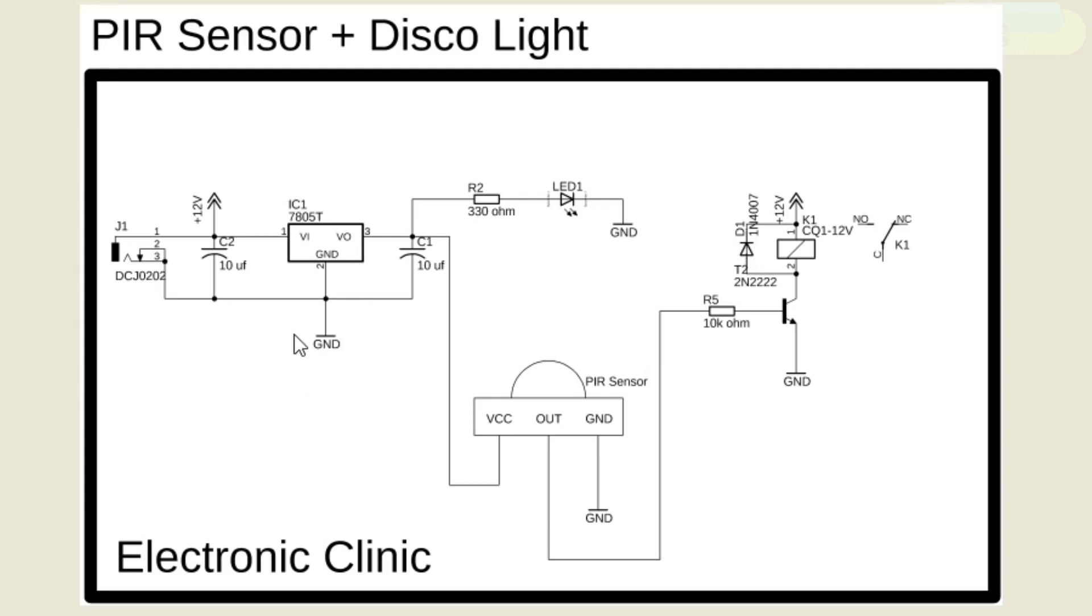This is the regulated 5 volt power supply based on the LM7805 voltage regulator. This power supply will be used to power up the PIR sensor module.